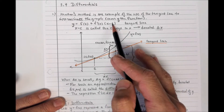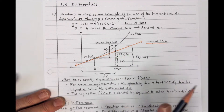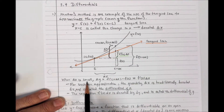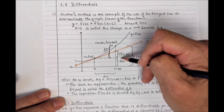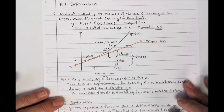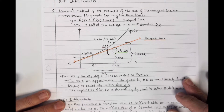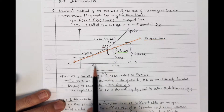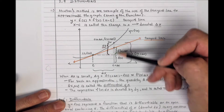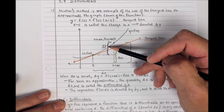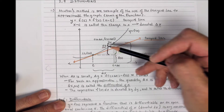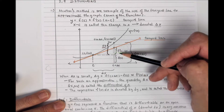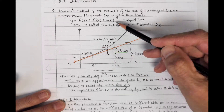If delta X is small, then delta Y — the difference in the Y values — is very close to the tangent line portion of the graph. Take some time to study this: the change in X values is delta X, the change in Y values is delta Y, and I can approximate that change using F prime of C times delta X from the linearization.